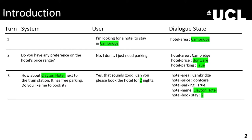Next, the system says, 'How about Clayton Hotel next to the train station? It has free parking. Do you like me to book it?' The user says yes and asks to book for two nights. Here the system suggests the value — the Clayton Hotel — and the user accepts. The dialogue state tracking system should be able to infer that the hotel name is Clayton Hotel, the one suggested by the system, not coming directly from the user.